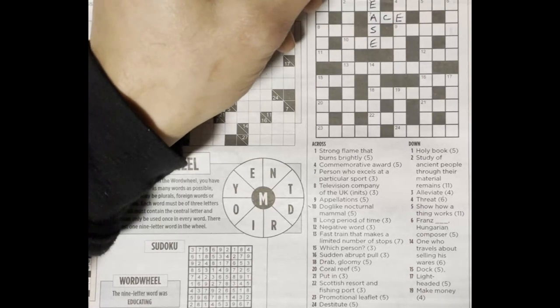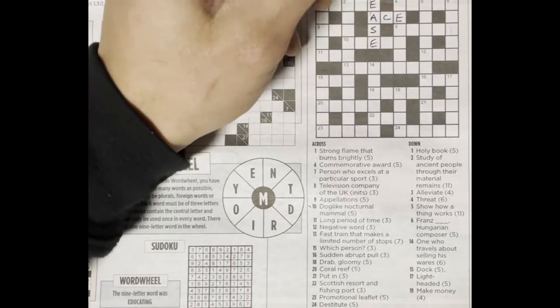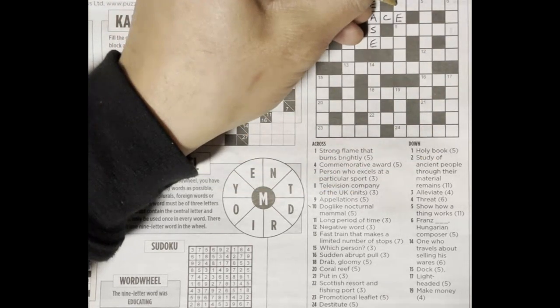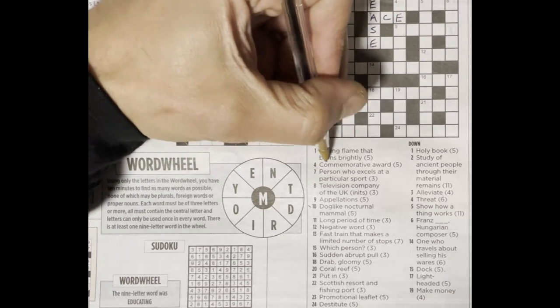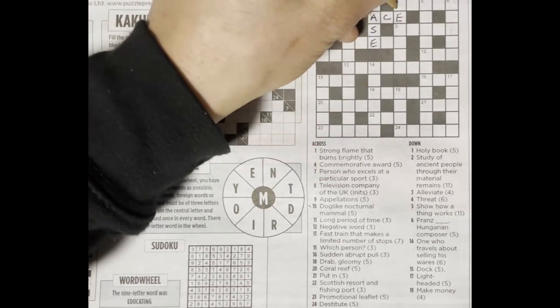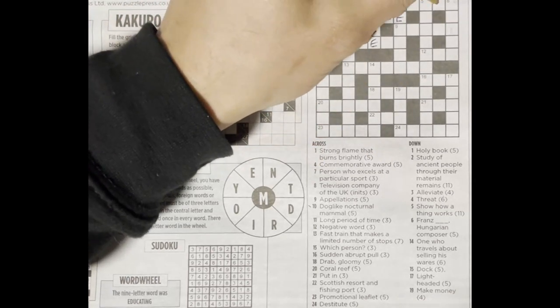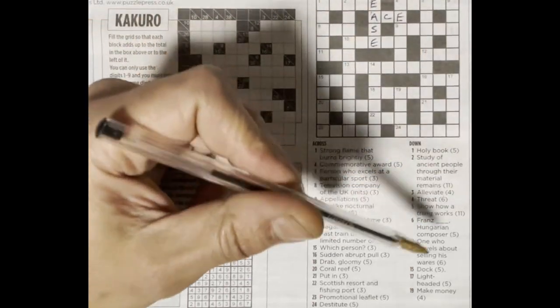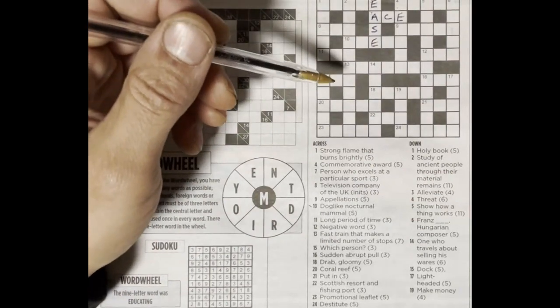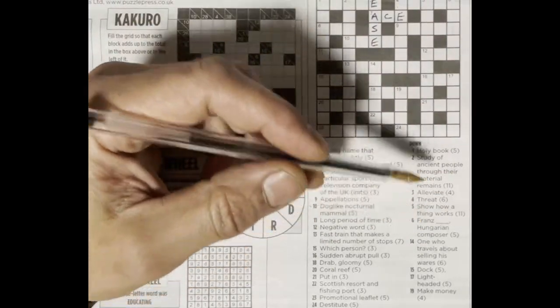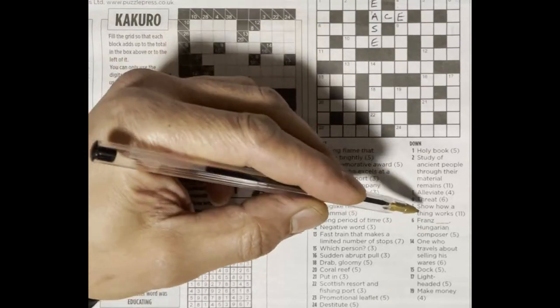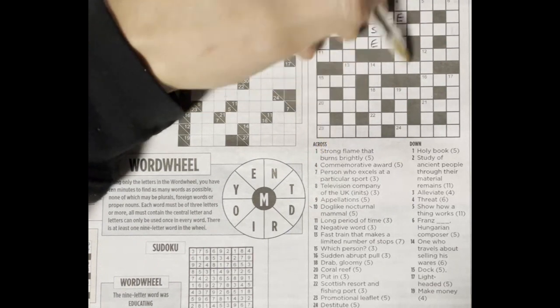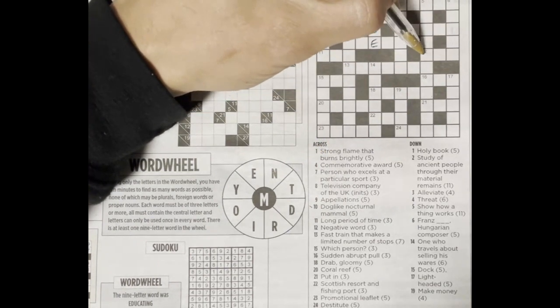Once I have a few, I'll go for it. Threat, menace. Four across, commemorative award, medal I think, M-E-D-A-L. Six down, France-Hungarian composer - you don't get these ones with the Metro very often. Think I know that, I've seen it before. I think it's medal.